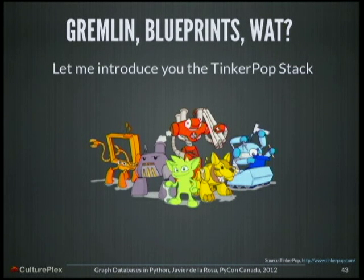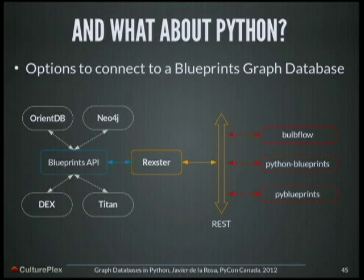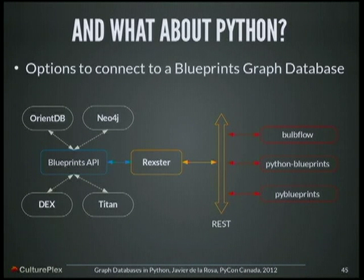So what is Blueprints or what is Gremlin? Let me introduce you to the TinkerPop stack. TinkerPop is, I think, a European company, and they are building tools and defining standard APIs to manage and handle graphs. One of the things they are doing is Blueprints — Blueprints is like a standard API to connect and interact with graph databases. Another thing they are doing is Rexster. Rexster is a service you can put on top of Blueprints, and then your graph database is also able to connect through REST. Once you have this architecture, you write your own Python client to talk to that interface.